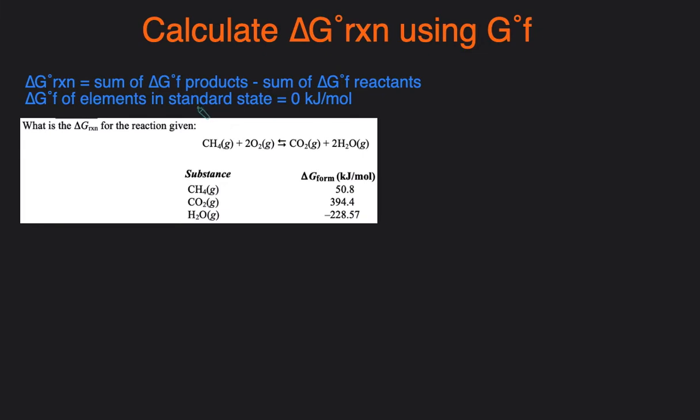Now let's take a look at an example of how we would calculate the delta G of the reaction. We have to calculate the delta G of this reaction right here and we're given the delta G formation of the reactants and products. So then we just plug into the equation delta G of the reaction.